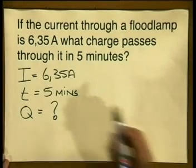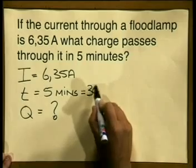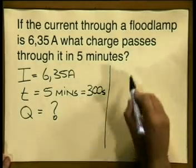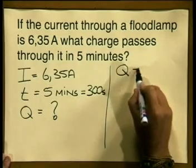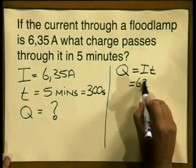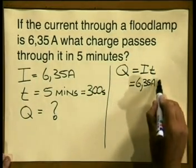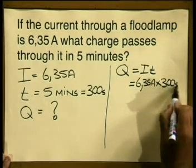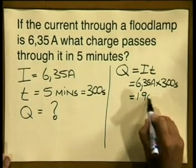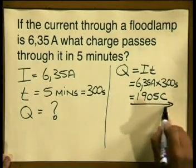We simply multiply 5 minutes by 60 seconds and we get a total of 300 seconds. Now let's do the calculation. We write down our formula, q is equal to i times t. We substitute into the formula: 6.35 amperes multiplied by 300 seconds. And the answer is 1,905 coulombs.